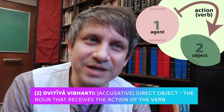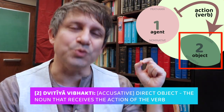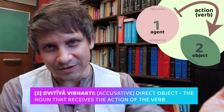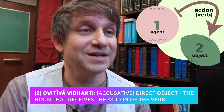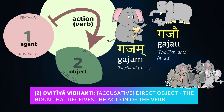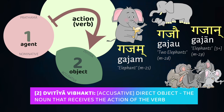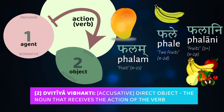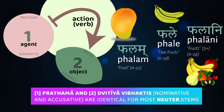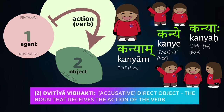The second case, the dvitiya vibhakti, is the accusative case. This is used when the noun is the direct object of a verb — the thing that gets eaten, given, said, or praised. For the masculine word gajaha, the accusative forms are: gajam, gajau, gajan — one, two, or three or more elephants as the object of the verb. For the neuter word phalam, the dvitiya vibhakti forms are: phalam, phale, phalani. Notice this is exactly the same as the nominative — this is true for basically all neuter words. For the feminine word kanya in the accusative: kanyam, kanye, kanyaha. Note that the dual and plural forms are identical in the nominative and accusative — this is a recurring feature of feminine noun stems.